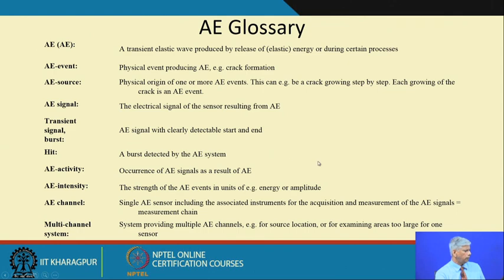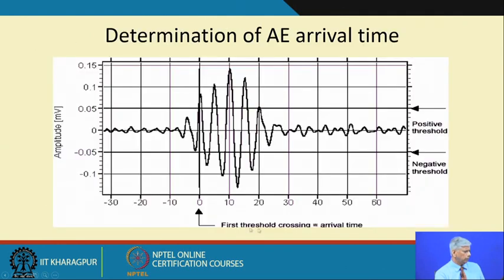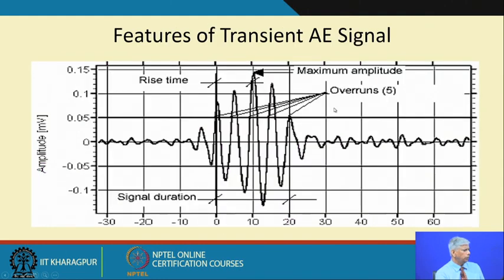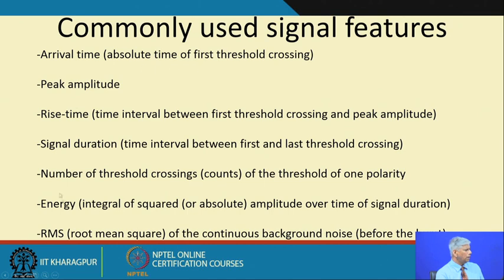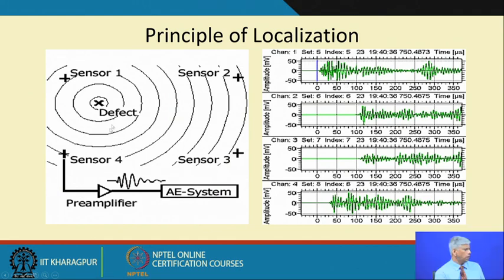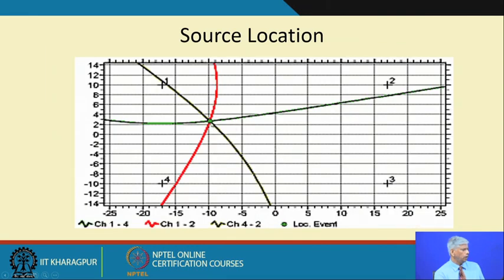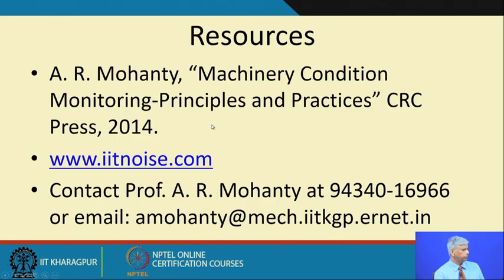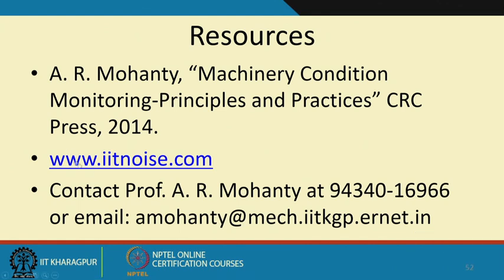The features of a transient AE signal include rise time, maximum amplitude, number of overshoots, and arrival time at a particular sensor location. These features allow quantification of the signal to give clues about the condition of the machine or component. Calibration is done using a pencil lead break test, and through Time Difference of Arrival (TDOA) — where different sensors record different arrival times — a triangulation technique can locate the fault source. More details can be found at iitnoise.com.